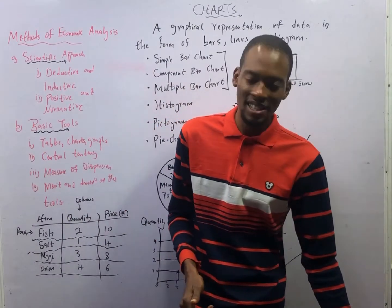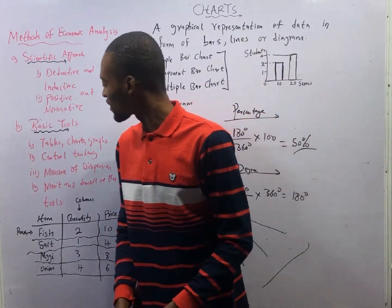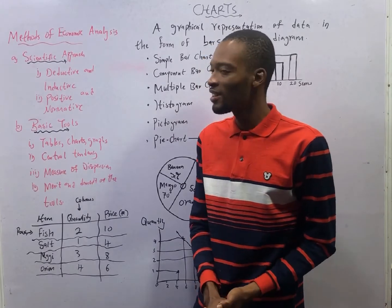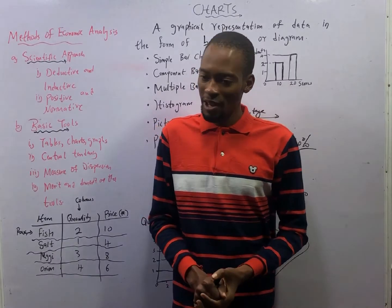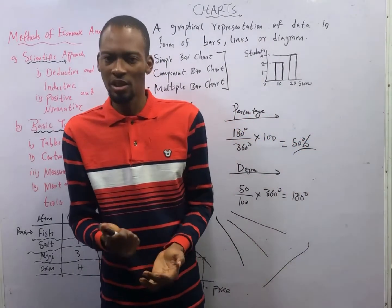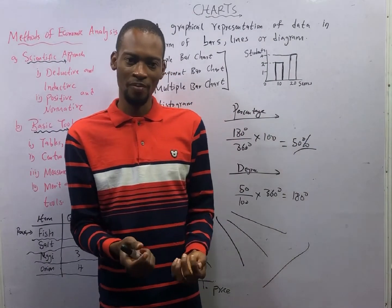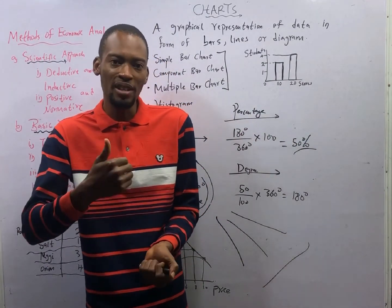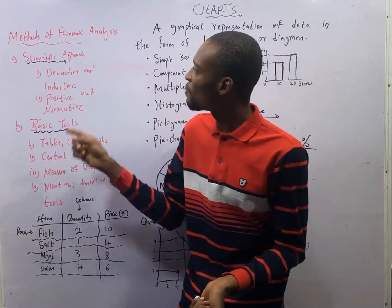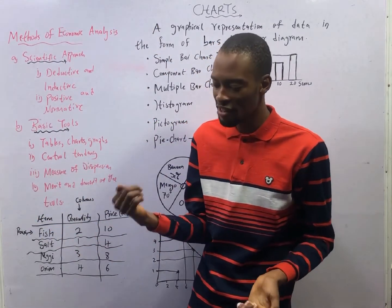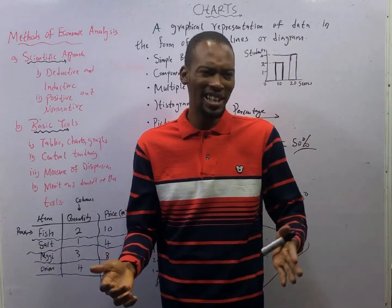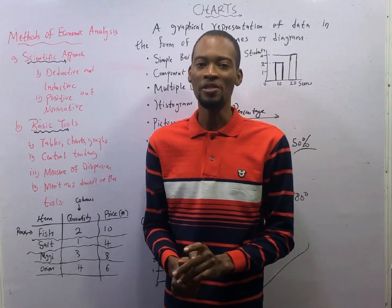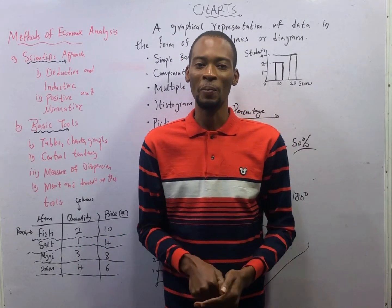This brings us to the end of this episode. For your assignment, open the Flash Nenas Jam app, click on question search, and go to charts or search graphs — you will see questions. In the Flash Nenas Jam application, you can study by topics: open the app, go to economics, choose the topic you want, and go to method of economic analysis or economic tools to see questions. It is an amazing application, and I look forward to seeing you in episode number 9. Thank you.